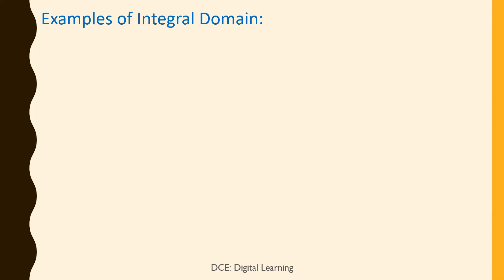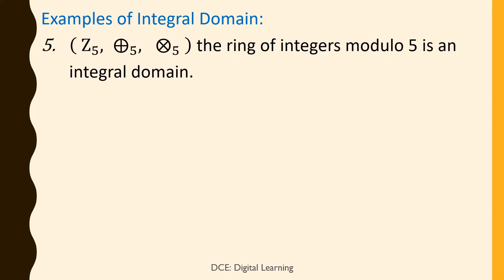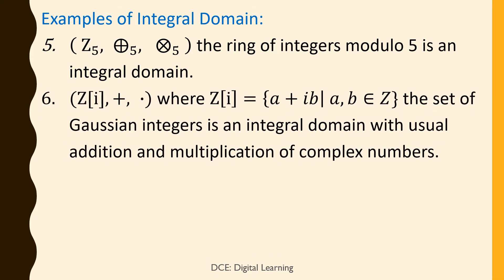5. Z₅ with addition modulo 5 and multiplication modulo 5 — the ring of integers modulo 5 — is an integral domain. 6. Z[i] (plus, dot), where Z[i] = {a + ib : a, b belongs to Z}, the set of Gaussian integers, is an integral domain with usual addition and multiplication of complex numbers.